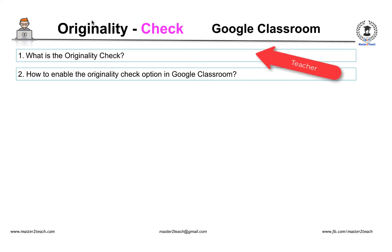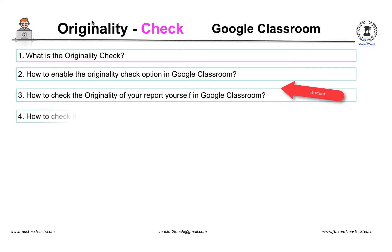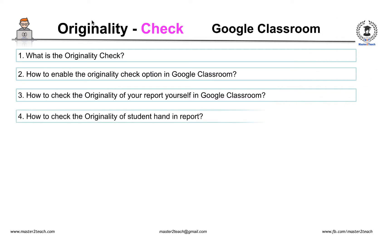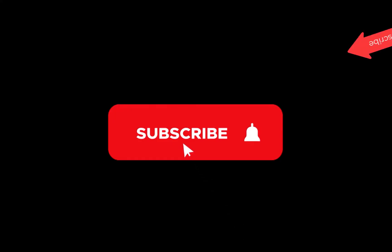We'll also cover how to check the originality of your report yourself in Google Classroom before submitting your assignments from the student point of view, and how to check the originality of a student hand-in report again from the teacher's point of view. We will discuss all the required steps, limitations, and examples.